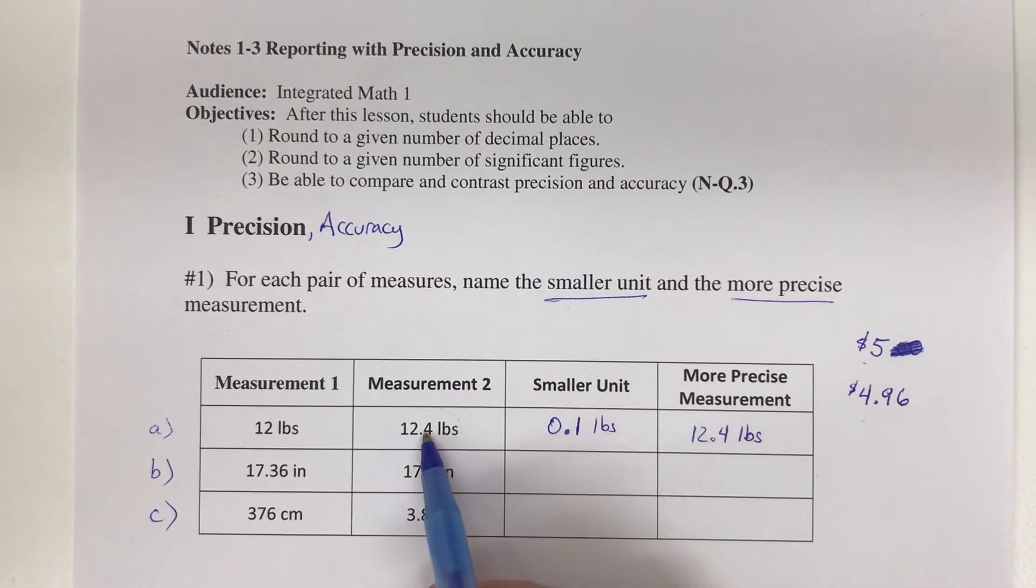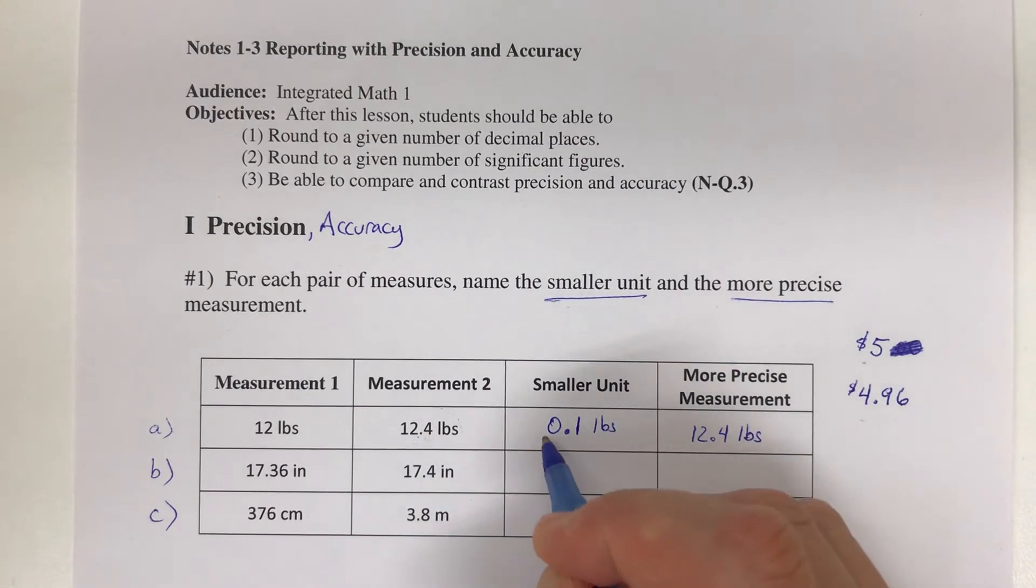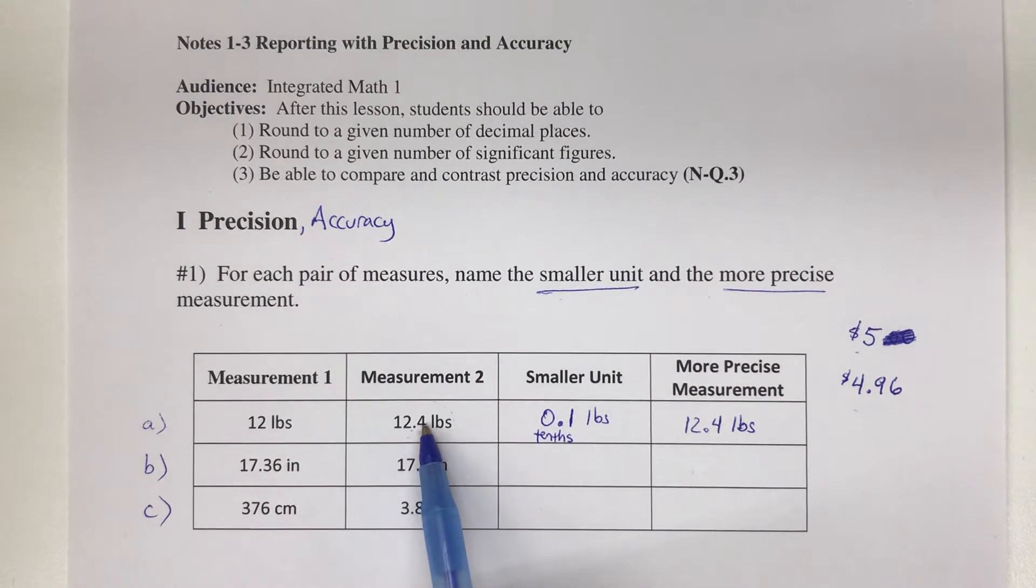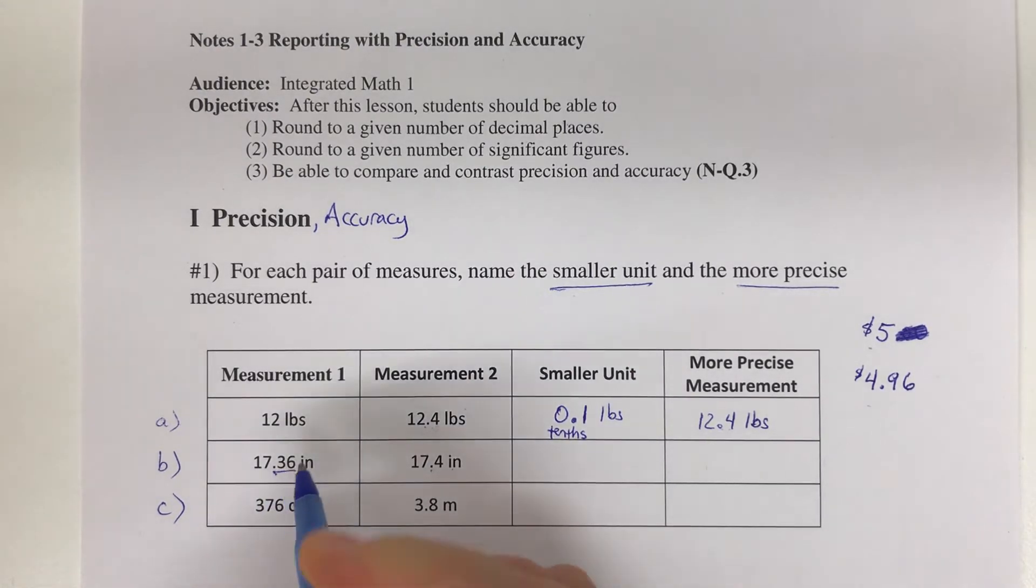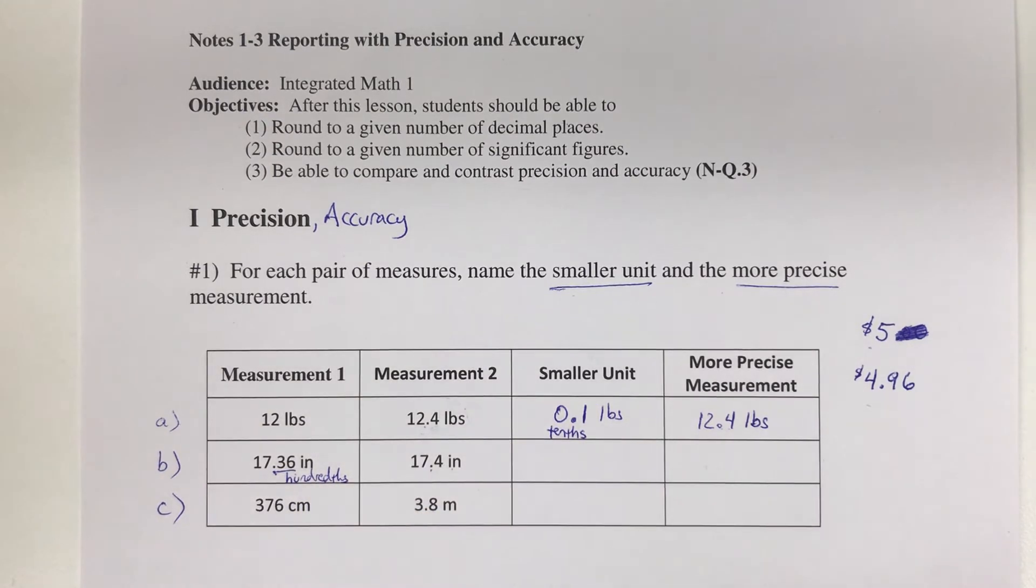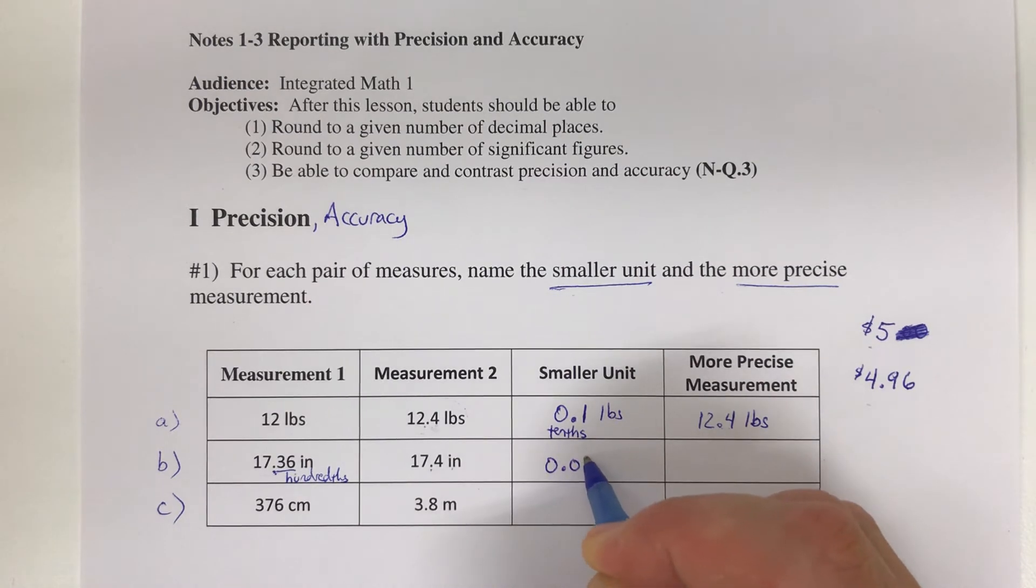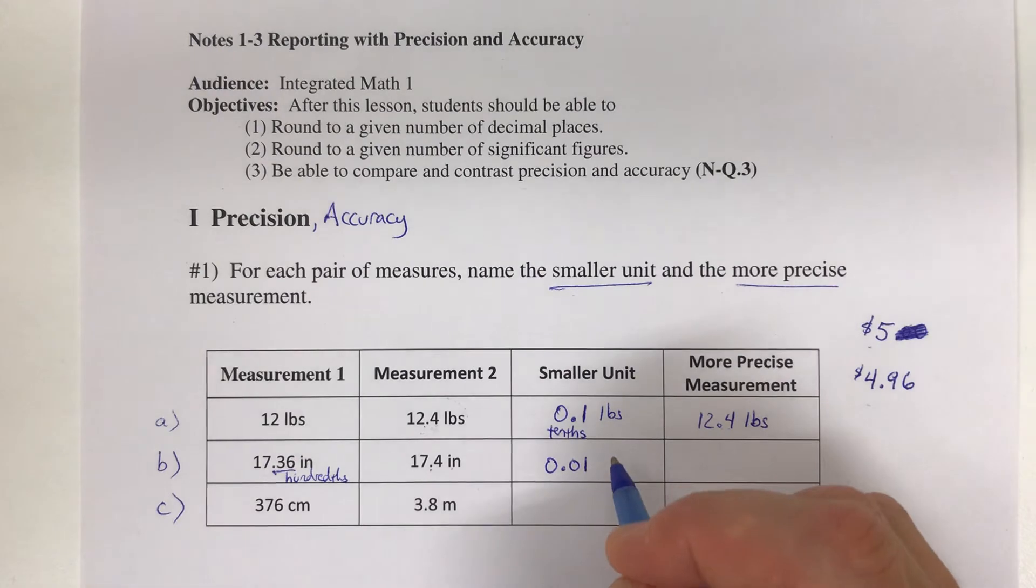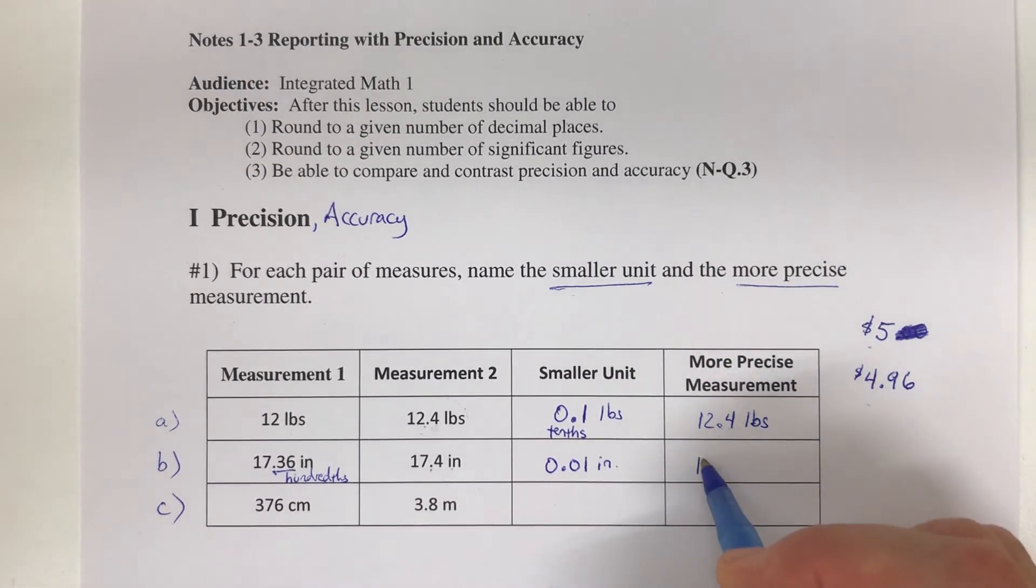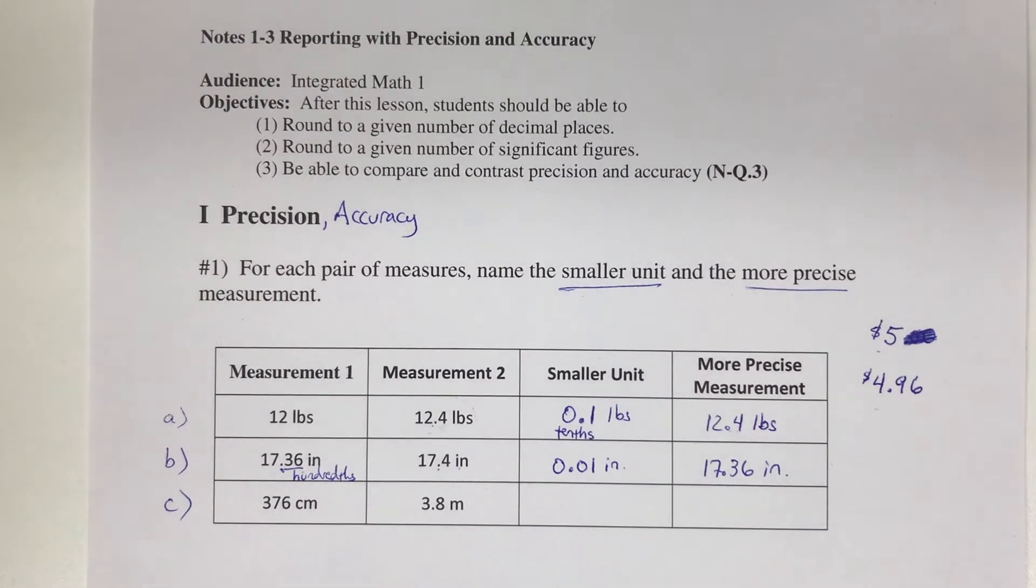So if we keep going like 0.4, 0.5, 0.6, that's going up by 0.1 pounds. Now in part b, we have 17.36 inches and 17.4 inches. This one is the smaller unit of measurement because this has two decimal places—that's the hundredths place—and that unit is 0.01. Each time the six goes up to seven, we went up one one-hundredth, 0.01 inches. The more precise measurement is 17.36 inches.